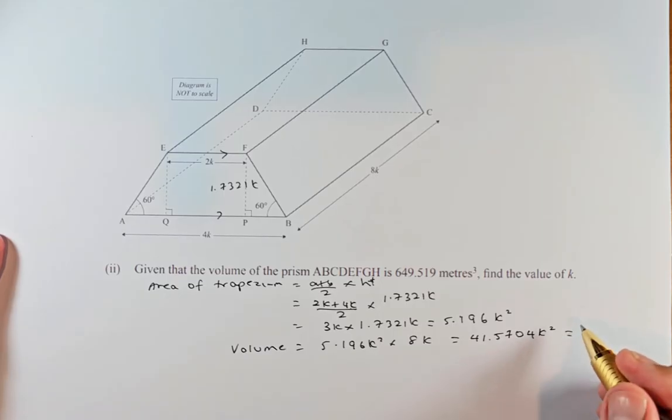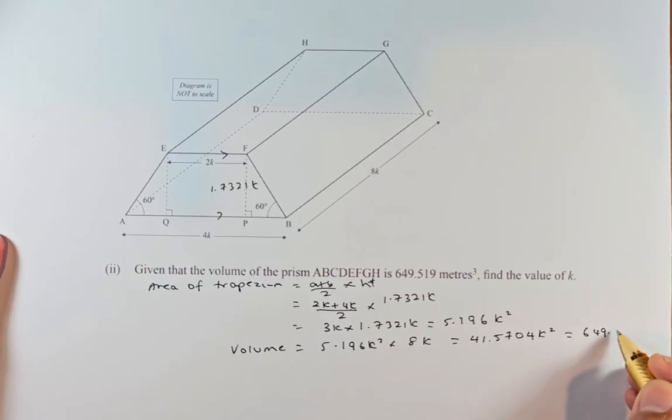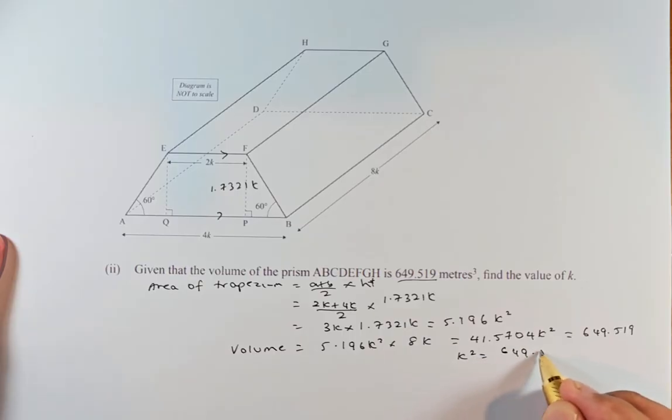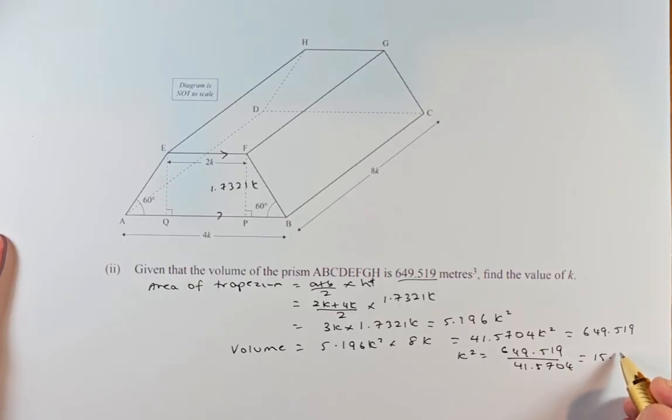That will give us a total of 41.5704k cubed. That's the volume and we know that volume is given as 649.519. So we are first going to divide both sides by 41.5704, so k cubed is equal to 649.519 divided by 41.5704. I did the calculation before, it's going to be 15.625.